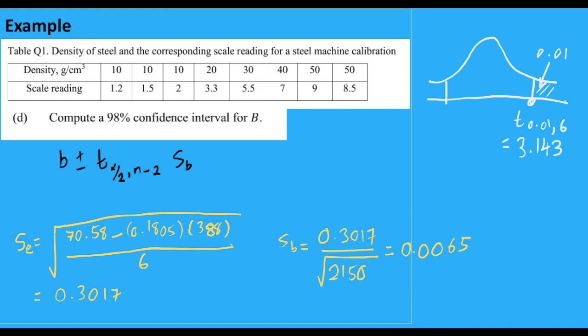And because we already have the values of T and Sb, we could already calculate the 98% confidence interval for B. So this would be 0.1805. Plus minus the T value is 3.143. And Sb is 0.0065. And so the 98% confidence interval for the slope is 0.1601, 0.2009.